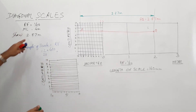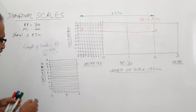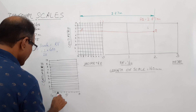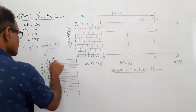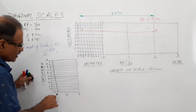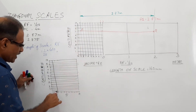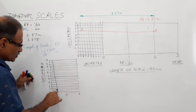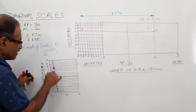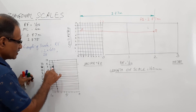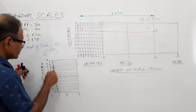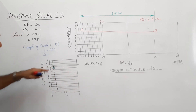If you are asked to show 2.875, you can show it. 2.8 — this is the line through 8. Going up: 2.81, 2.82, 2.83, 2.84, 2.85, 2.86, 2.87 — and then at the half-division step, 2.875. Mark that point. You can show 2.875.